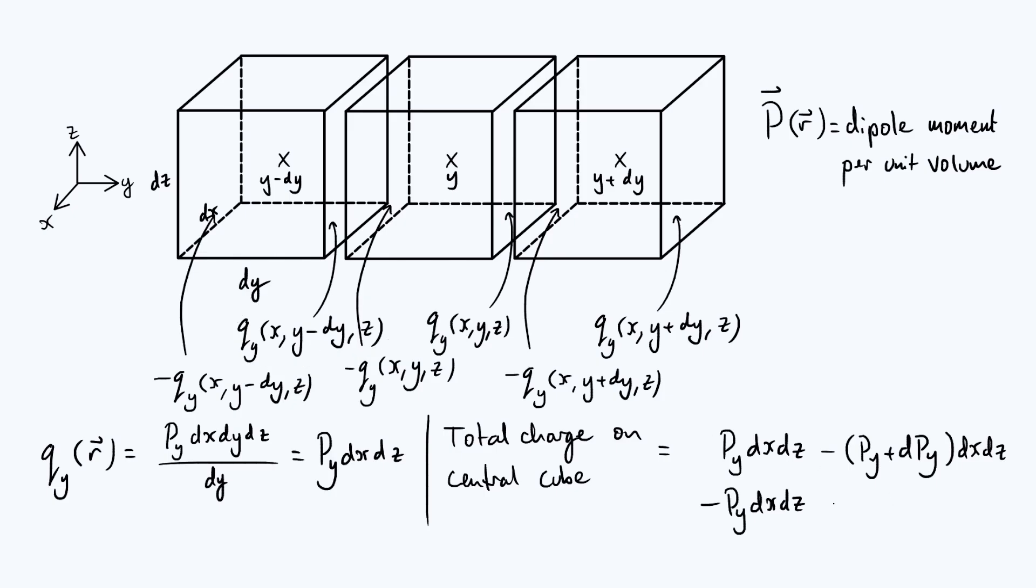Then we've got to deal with this q_y of y minus dy. By the same logic as before, I can write this as plus P_y minus that same little increment in P_y times dx dz.